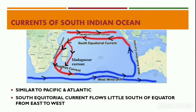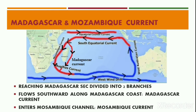The currents of the south Indian Ocean are similar to those of the Pacific and Atlantic oceans. The South Equatorial Current starts flowing from a little south of the equator in an east to west direction, parallel to the equator. On reaching Madagascar Island, the South Equatorial Current gets divided into two branches.